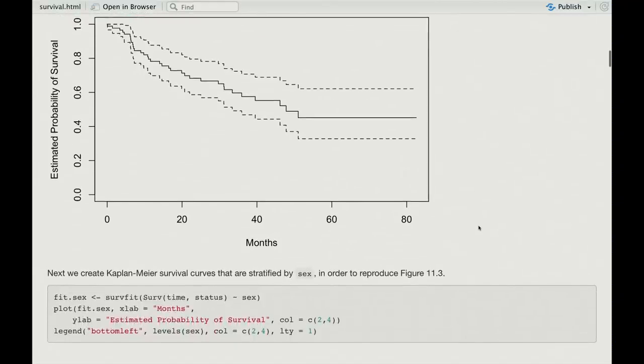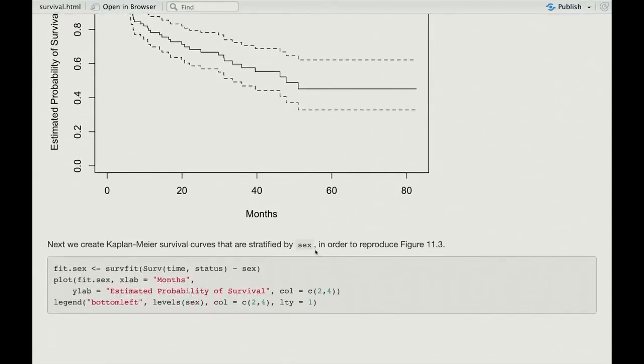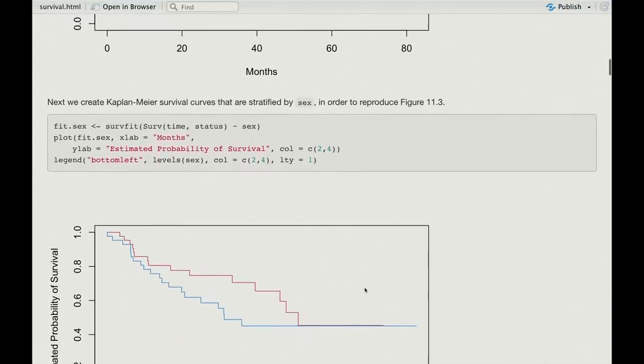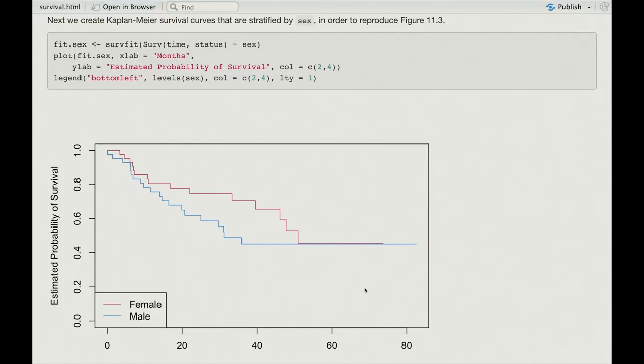And now you can make, instead of putting a twiddle one on the right of the formula, you can put a stratifying variable. So here we put sex, which is binary, and we do it again. And we can specify colors for the two sexes. And we can put a legend in the plot as well. And there we get it. And you can see when you stratify, the default is not to put standard errors, because the picture gets a little cluttered.